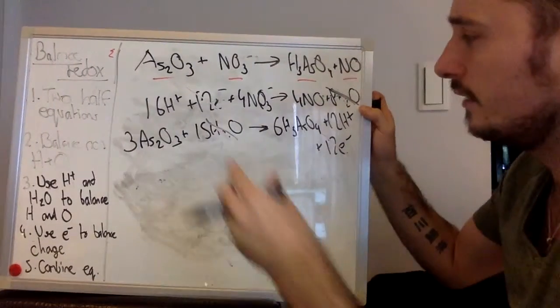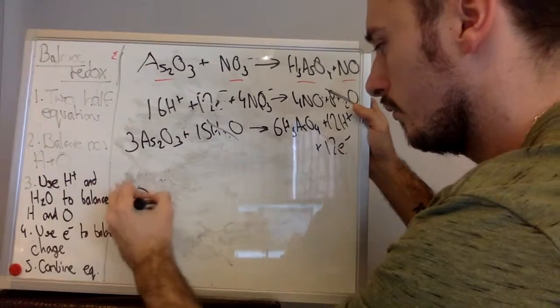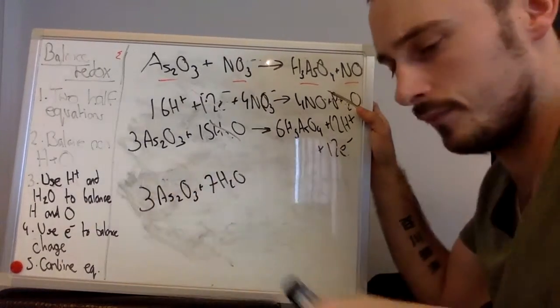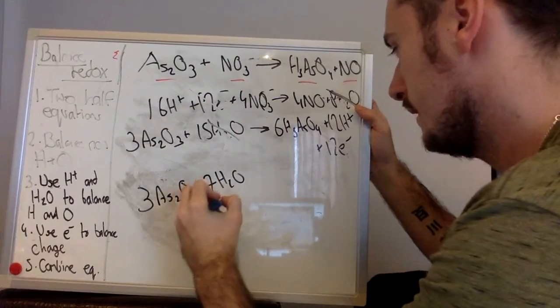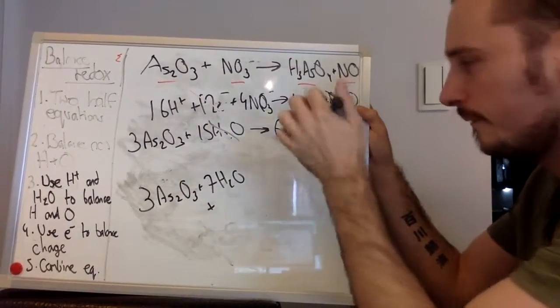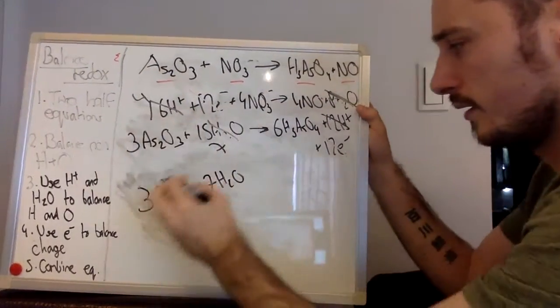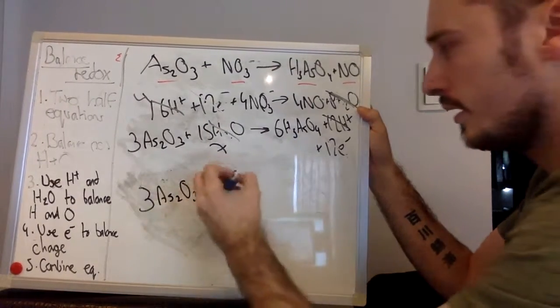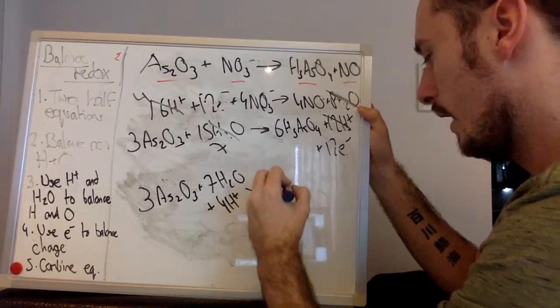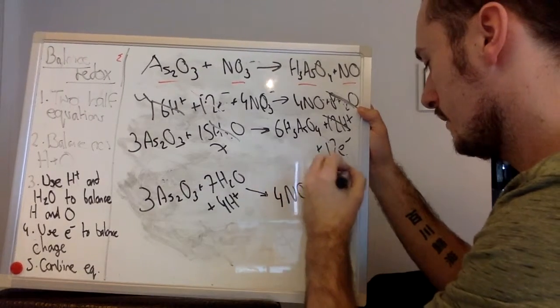Let's cross them out. Then you can add everything else together to get your full balanced equations. So let's do that now. 3As2O3 plus 7H2O plus 16, oh, I forgot to do the H plus. So 16H plus here, 12H plus here, they're going to cancel out to 4H plus. 7H2O, 4H plus. So 3As2O3, 7 water, 4H plus. Our electrons are gone and on this side we're going to make 4NO and 6H3AsO4.